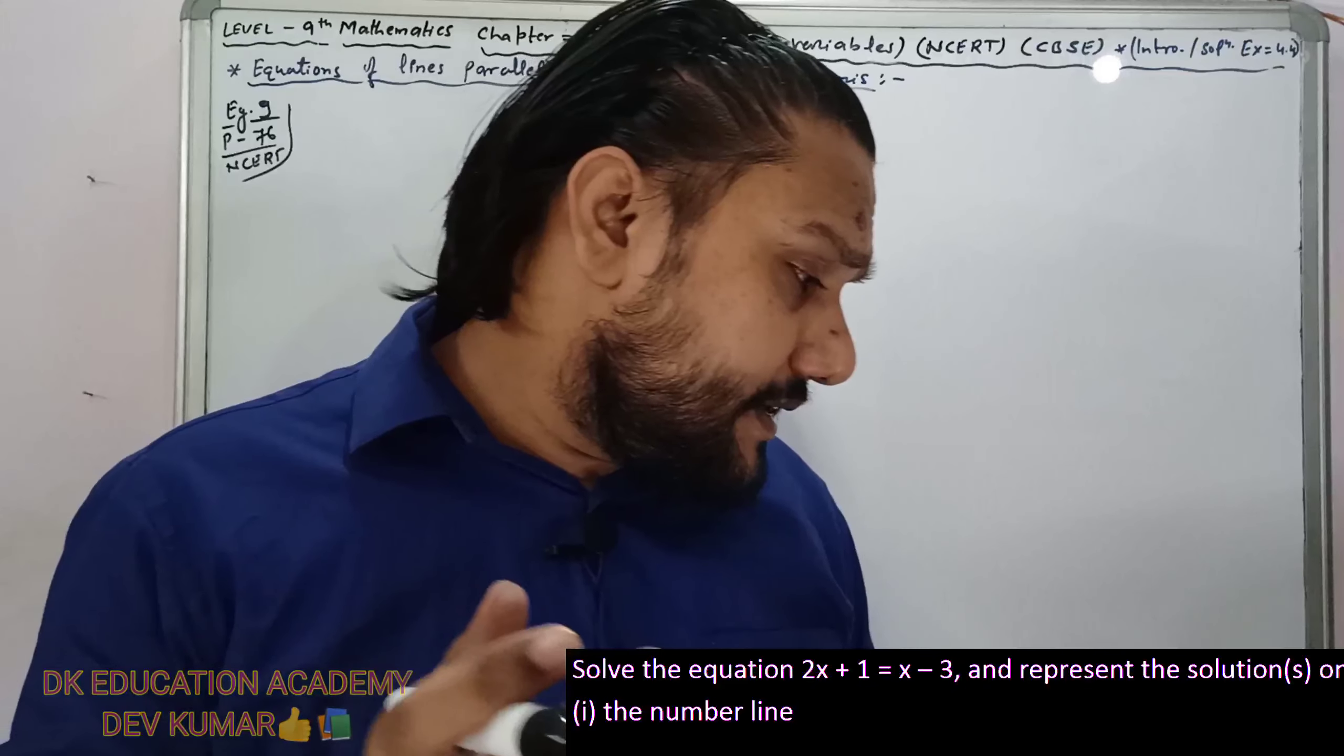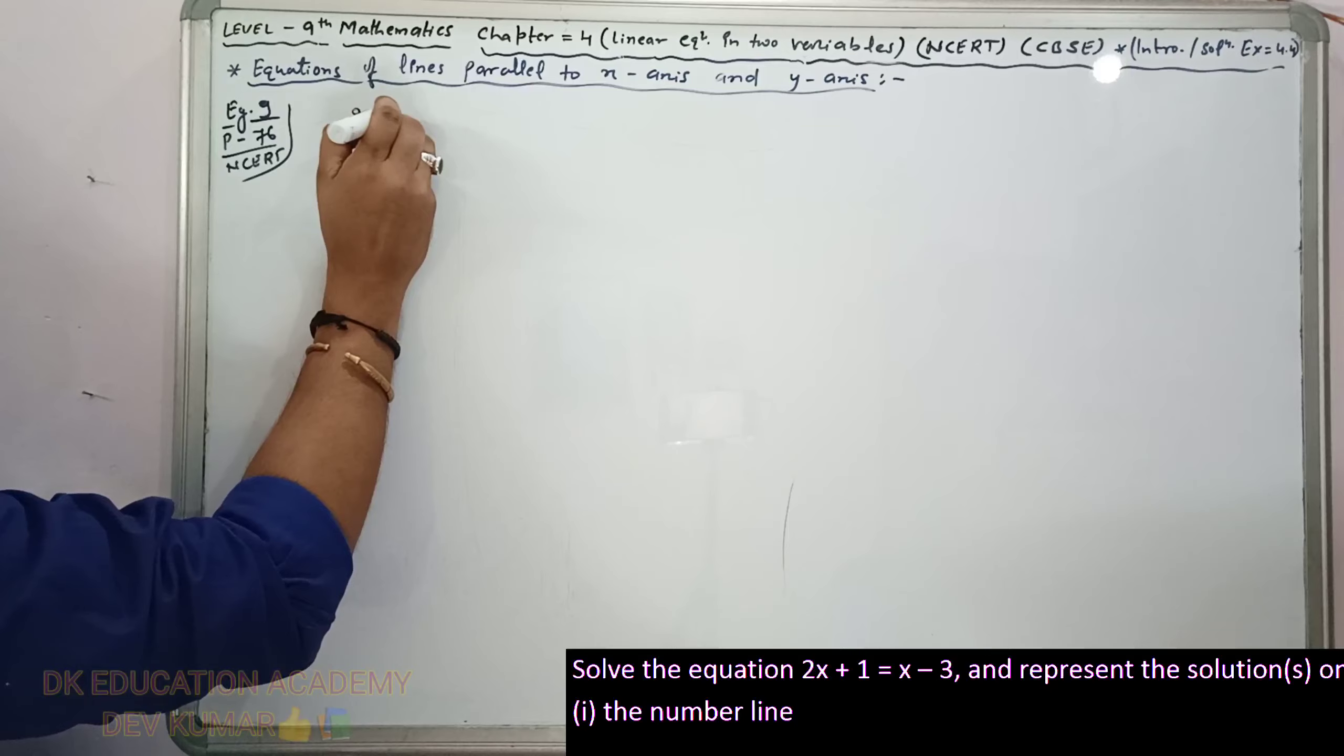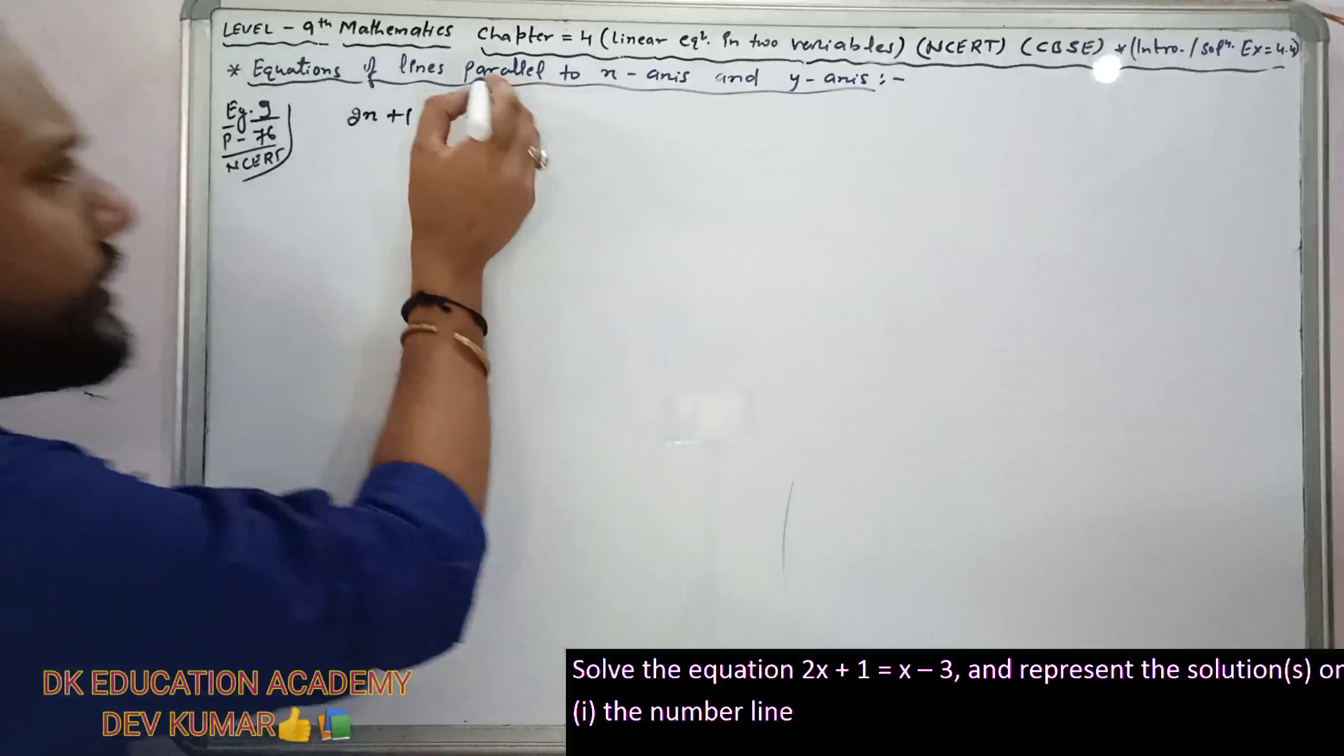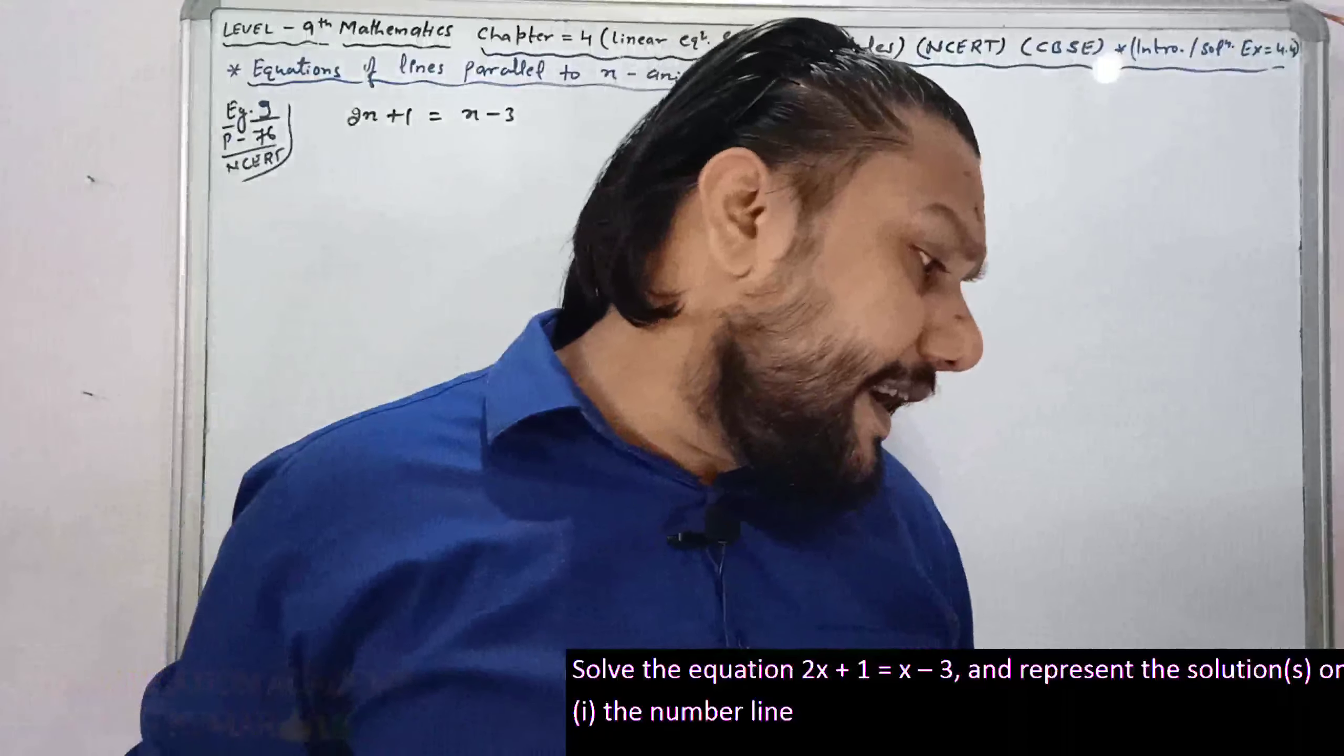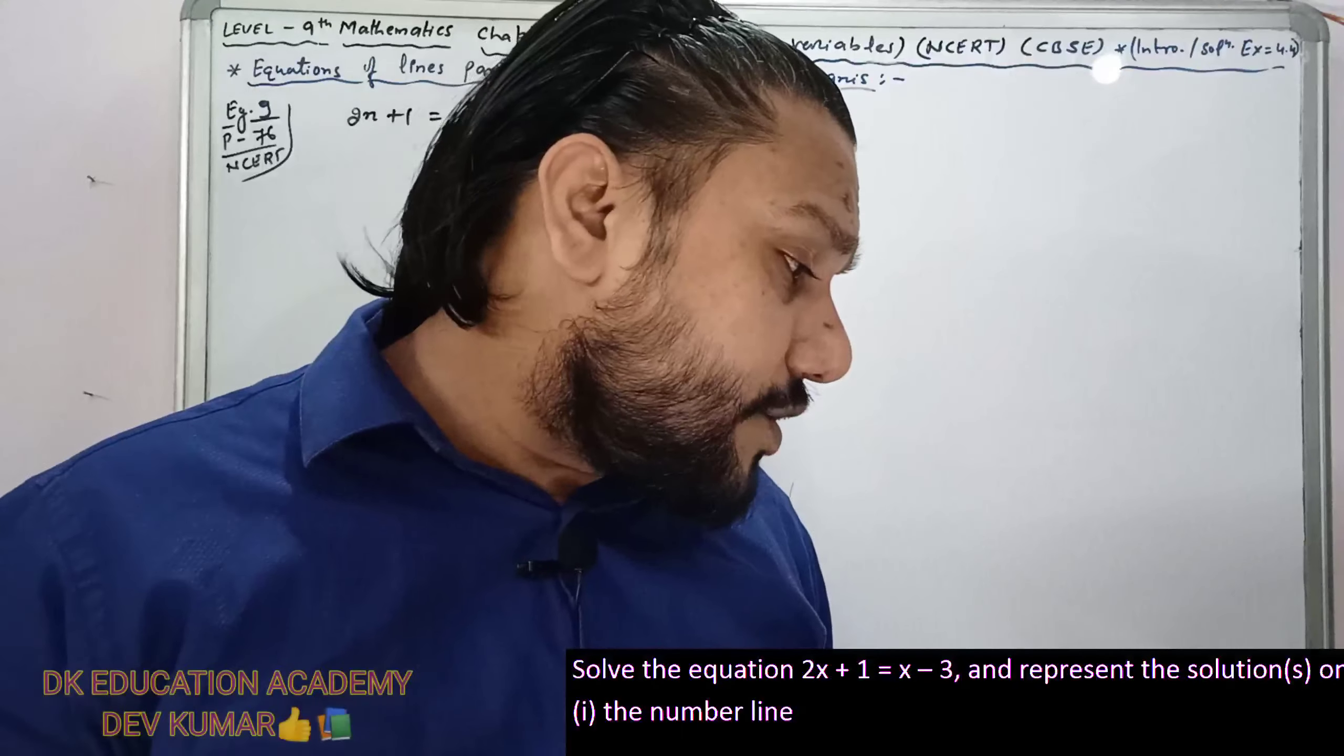The equation 2x plus 1 equals x minus 3. We have to solve and represent the solutions on number line and Cartesian plane. Now we solve: 2x plus 1 equals x minus 3. Taking like terms, 2x minus x equals minus 3 minus 1, so x equals minus 4.